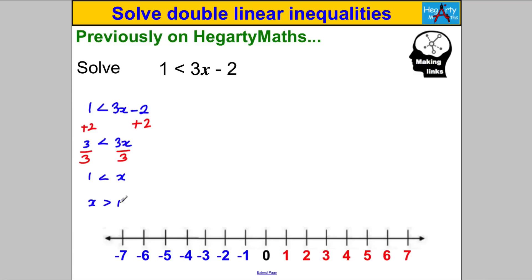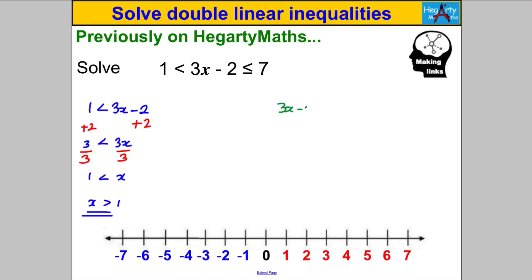But what if on top of that, 3x subtract 2 is also less than or equal to 7? You could solve that one independently: 3x subtract 2 is less than or equal to 7, so add 2 to both sides, giving 3x is less than or equal to 9, then divide both sides by 3.